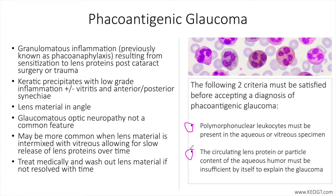From an examination standpoint, mild to severe conjunctival hyperemia is usually present coupled with a decrease in visual acuity compared to early post-operative values. Slit-lamp exam reveals keratic precipitates with low-grade inflammation with or without vitreitis and often with anterior and/or posterior synechia. Gonioscopy may reveal lens material in the angle.